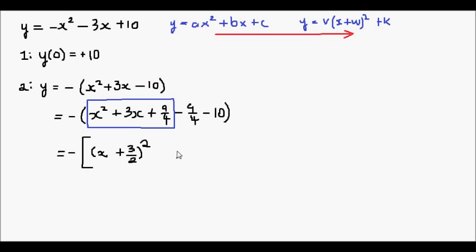So now I will complete the brackets. 9 fourths minus 10, well that will be equivalent to, if I factorize out a negative, 9 fourths plus 10 will be equivalent to 49 all over 4. Now if I take the negative back in, I'll get negative x plus 3 on 2 brackets all squared plus 49 divided by 4. So now I have the equation, our original equation written in vertex form.